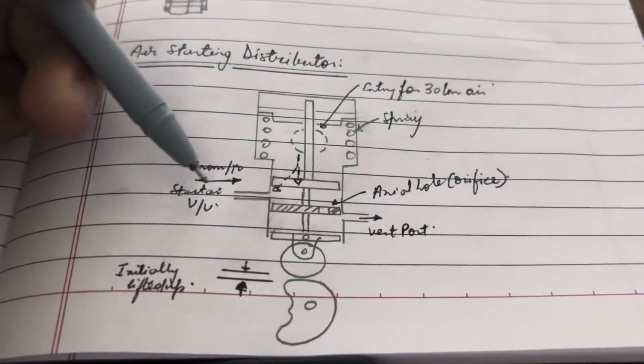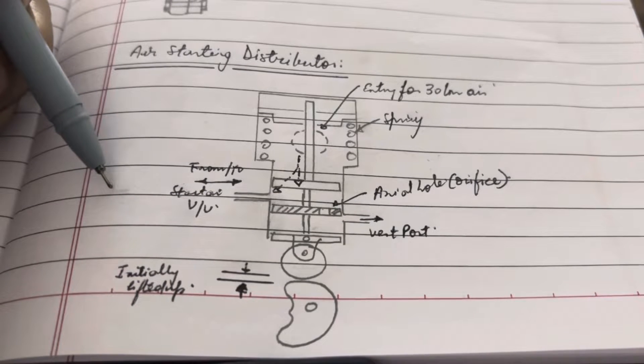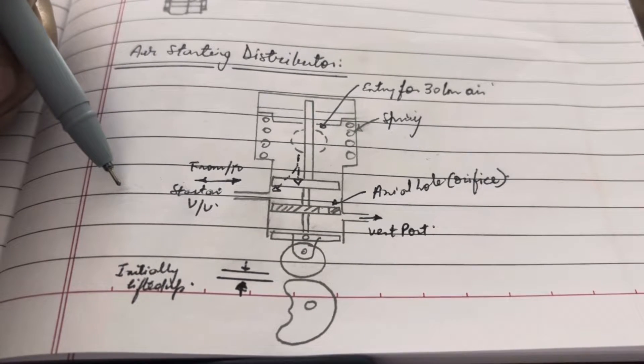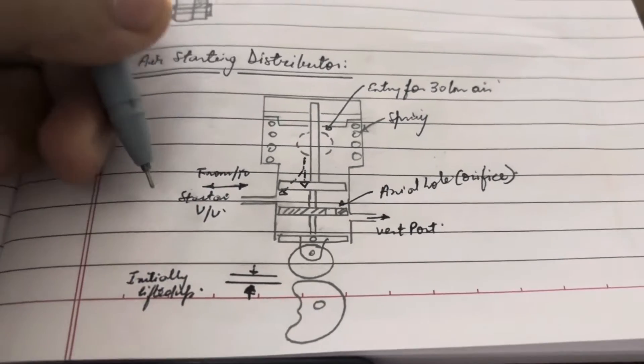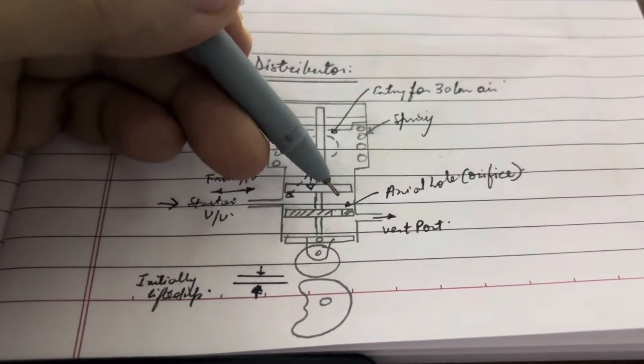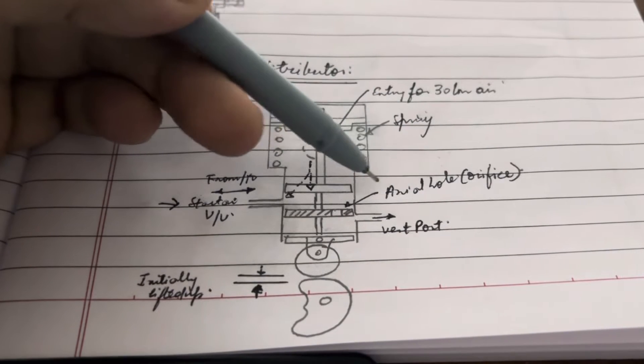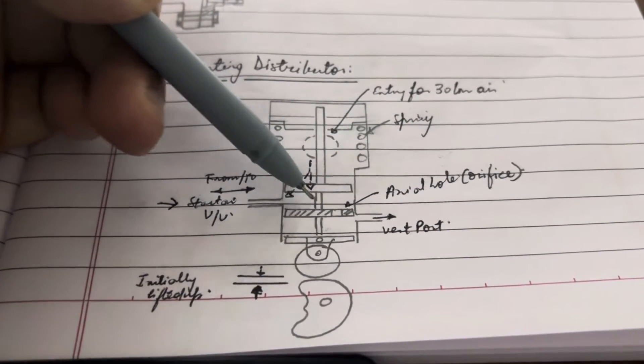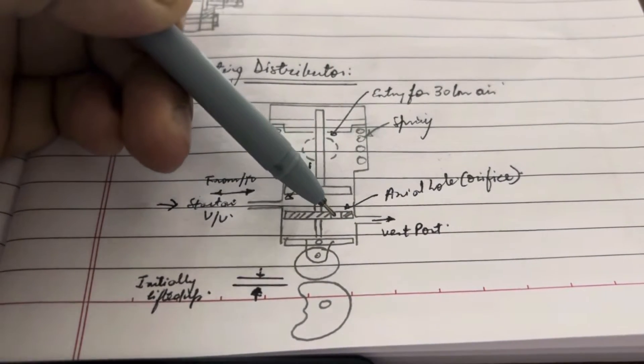That is, towards this direction. The orifice hole indicated over here, the axial hole—this air comes down through this orifice and is vented out.